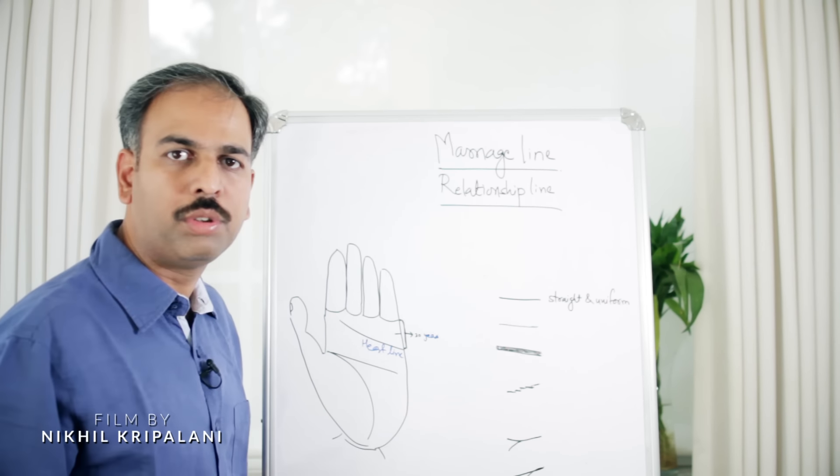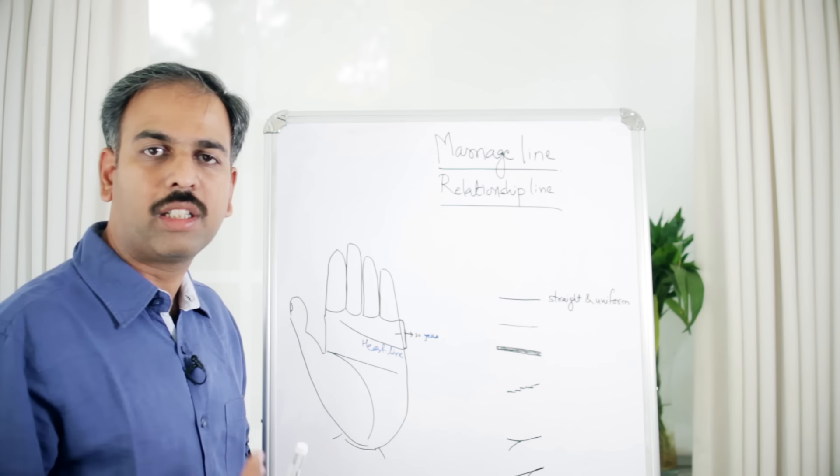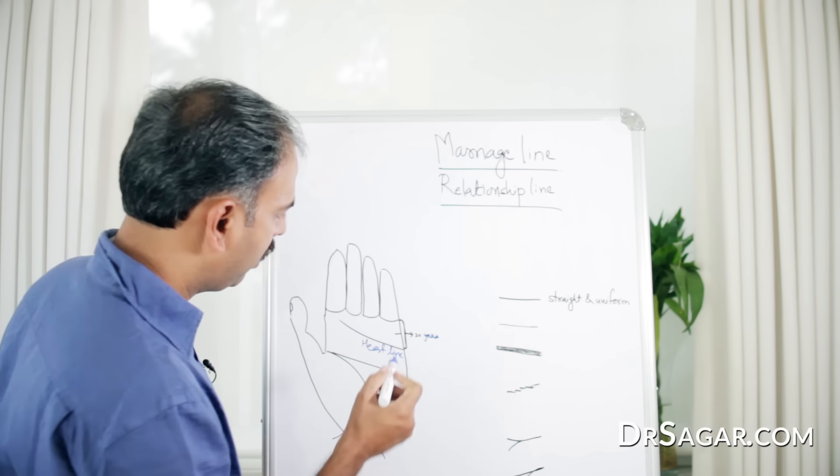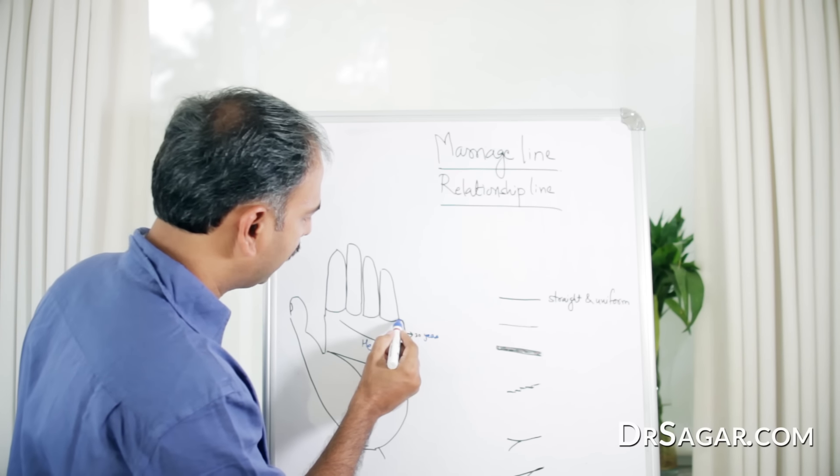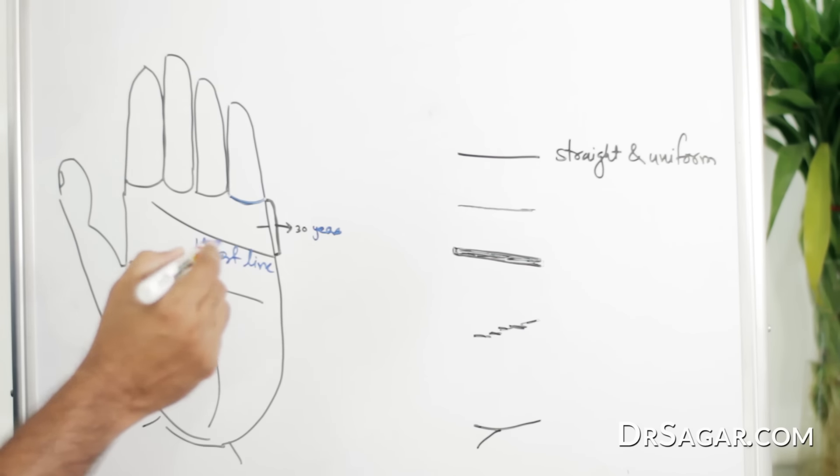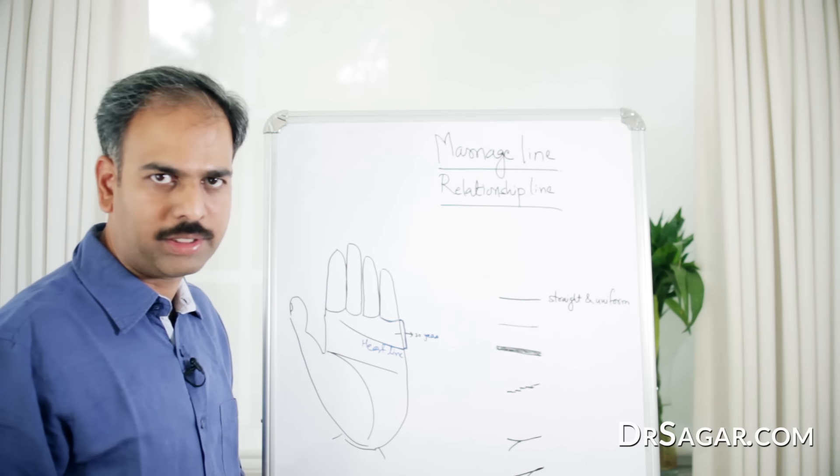First, I will show you where to see the marriage line, or we can also call it the relationship line. We have seen the phalanx, the lower end of the little finger, and the heart line. This area is where the relationship line or marriage line is present.